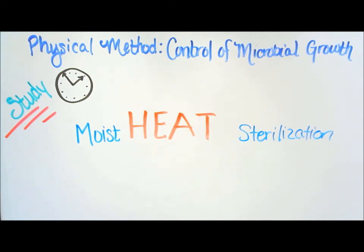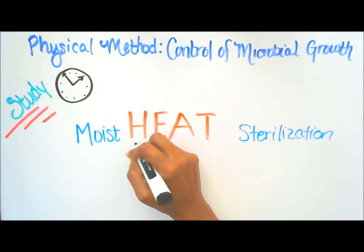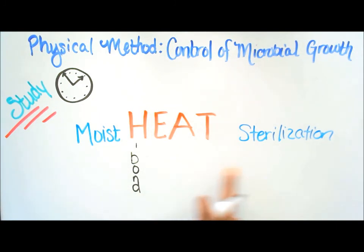Welcome to the study time portion of this video. This is the physical method, the control of microbial growth. First, we're going to look at moist heat sterilization. So how are you going to remember the two points? We're going to start with H, H bonds.